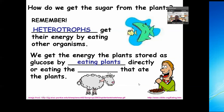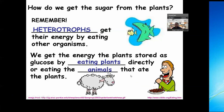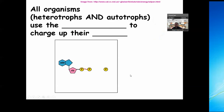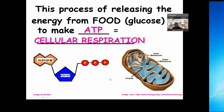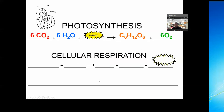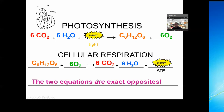Heterotrophs get their energy by eating things. On the cellular level, it's ATP — that's your chemical energy. What we're going to talk about next is how you actually get this molecule made. Now I want to switch gears and talk about our comparison between photosynthesis and cell respiration.